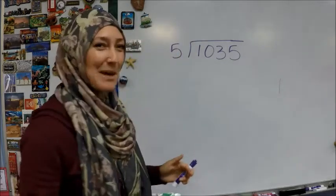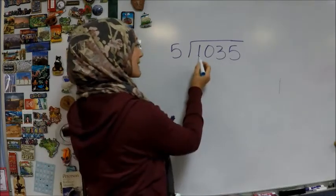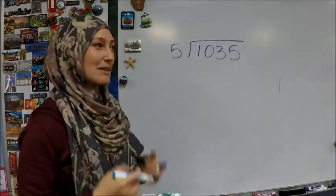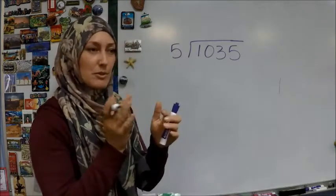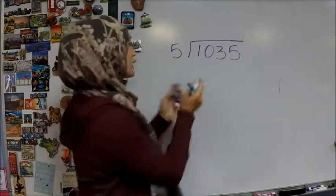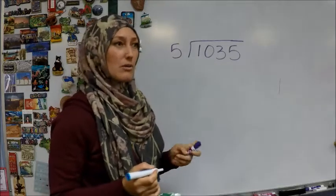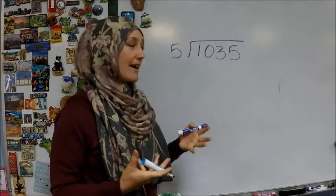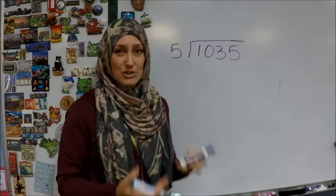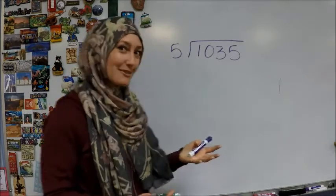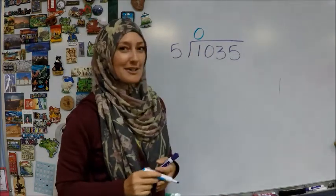So the very first mistake happens almost right away when you have a number that starts with something smaller than what your divisor is. Because oftentimes, what you need to ask yourself is you do it digit by digit. So you say, how many times can 5 go into 1? Or what can I multiply 5 by to get to 1? And you can't. So you need to show that you tried and you can't do it. So I need to show that there are no 5s that go into 1.